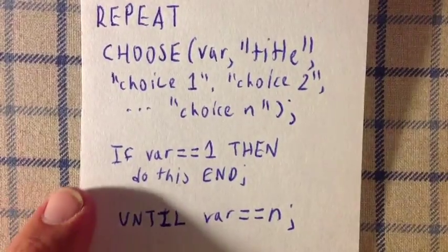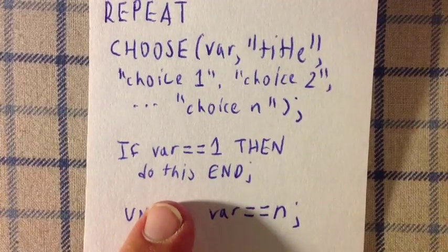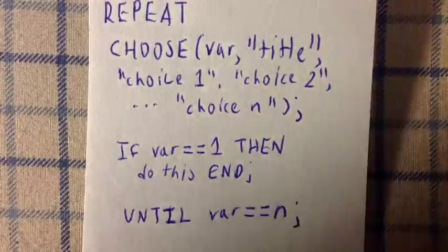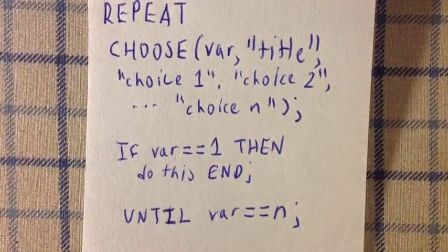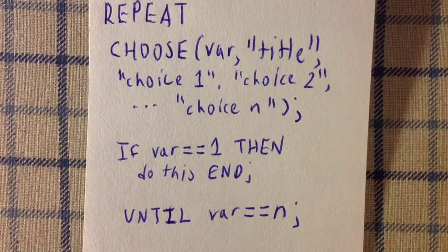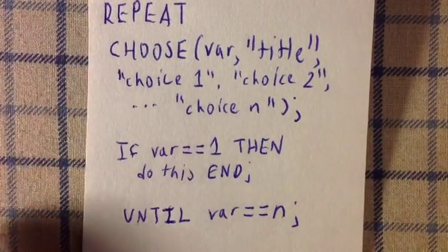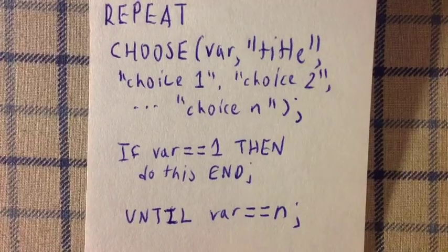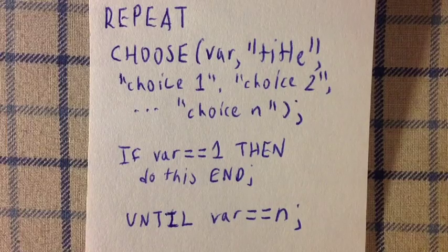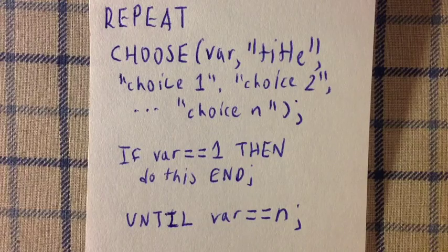So for choice 1, you go: if the variable is equal to 1, then do the things that correspond to the first choice, and finish with an end. Do this for each choice until you get to the last exit choice, because we're going to close out the repeat loop with 'until the variable is equal to N.'